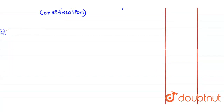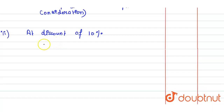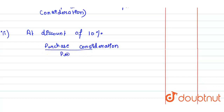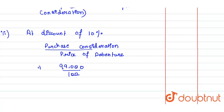Now let's move on to the second case — at a discount of 10%. In this question, we have not been given the debenture value directly; we only know it is Rs. 99,000. So we will calculate the number of debentures: purchase consideration divided by the price of debenture. The price with 10% discount is Rs. 90, so the number of debentures is 1,100.